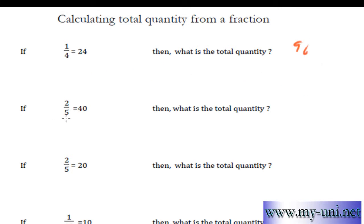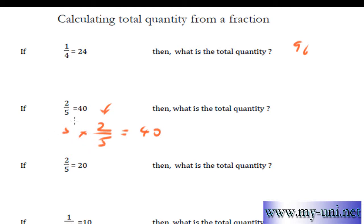2 fifths of a quantity is 40. Then what is the whole quantity? Same deal. 2 fifths is equal to 40. You have to convert this side of the equation to a whole quantity — just 1. So multiply it by the reciprocal fraction, which would be 5 over 2. Just flip it over. And when you do that to this side of the equation, you have to do exactly the same thing to the other side — multiply 40 by 5 over 2 as well.